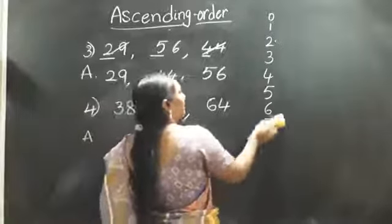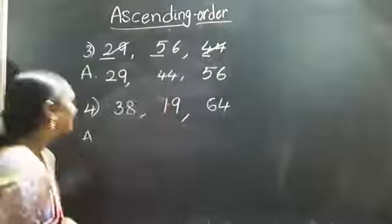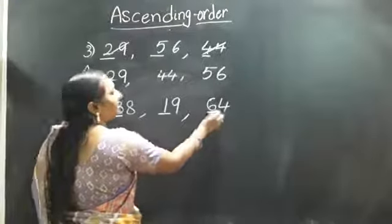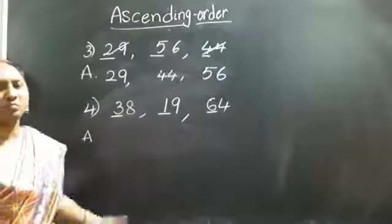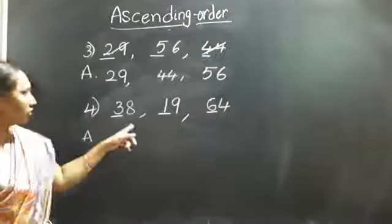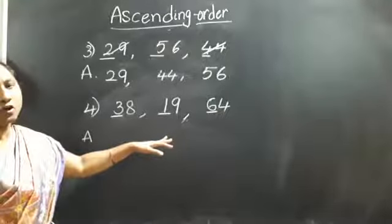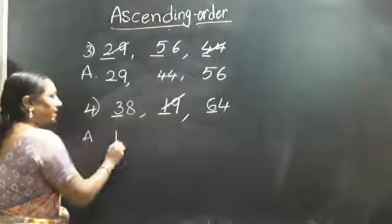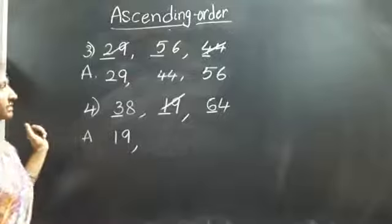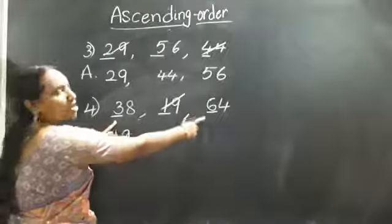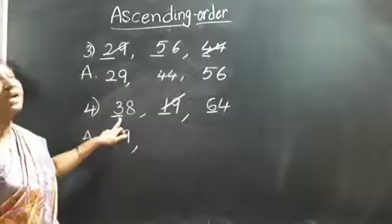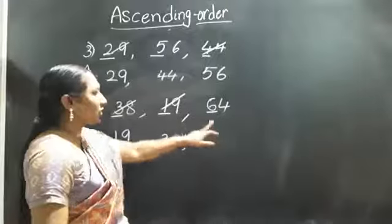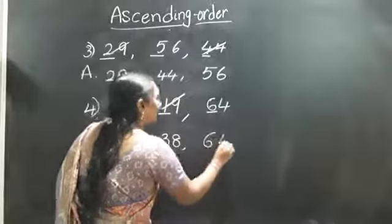I'll erase the number line and teach you how to write without it. Now tenths place — what numbers are there? Three, one, six. Which is smallest? Zero is there in tenths place? No. One is there? Yes. Cut the nineteen, write this side, margin. Next: two is there? No. Three is there? Yes. Cut the thirty-eight, write this side. Nineteen. Remaining number is sixty-four.